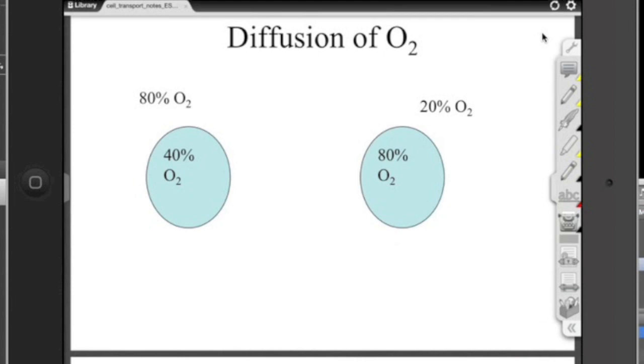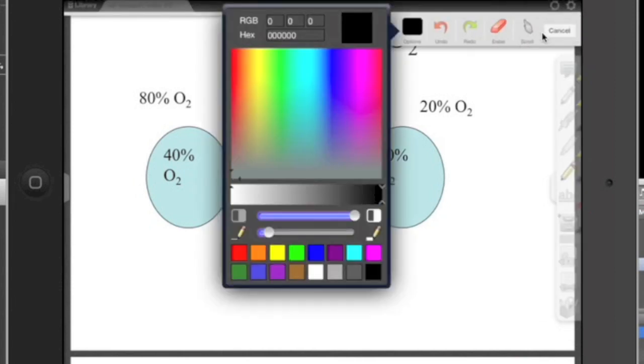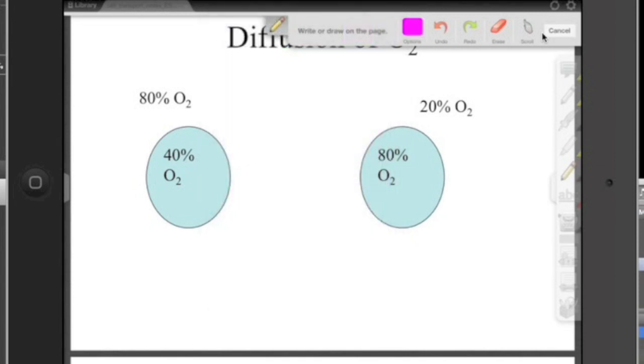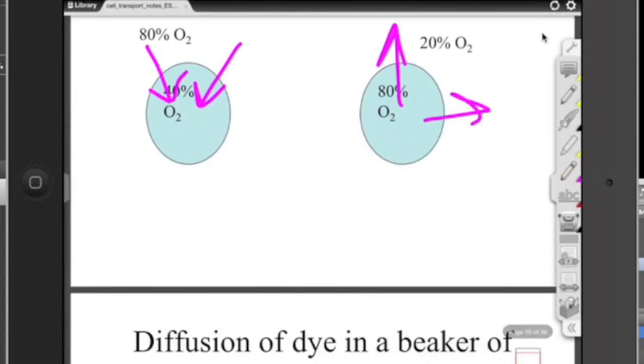Maybe I want to thicken up my pen for this diagram annotation and change it to pink. And we could say that higher concentration is going to move in. Lower concentration is going to move out. Really nice. Done. Done a good job annotating our diagram.